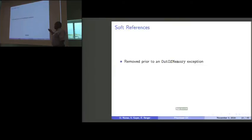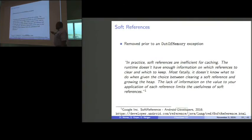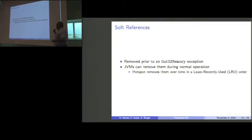Is there a way that we can keep the garbage collector from dominating our runtime and handle these entries of various sizes? Well, yes, we can use soft references. Soft references are very good because they're reclaimed as memory pressure increases. It allows the collector to reclaim memory before our program falls over and dies from running out of memory. But looking at the Android documentation, there's a bit of a mismatch. In practice, soft references are inefficient for caching. The runtime doesn't have enough information on which references to clear and which to keep. Most JVMs end up having to do some work to actually remove them during normal operation instead of waiting until the very end. Hot spots in particular remove them in the least recently used order, which works for some programs but not all.